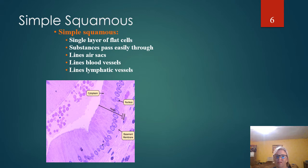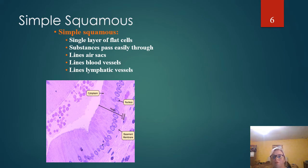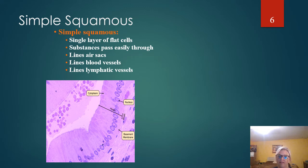One thing to look for is that free surface — that open surface at the top layer of those cells. That's one way you know you are dealing with epithelial tissue. That does depend on the type of slides you are looking at — if it is a cross section, you're not necessarily going to see that, but we will go over that in the lab video.